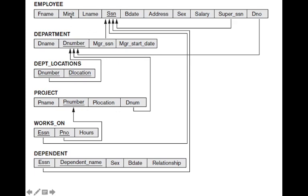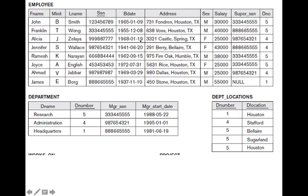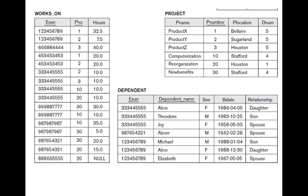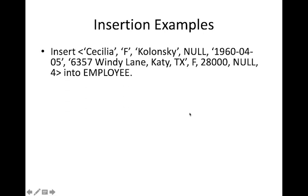The example we will be using is the employee-company database, which we have already seen. These are the different relations in it, and we have already covered foreign keys and referential integrity. We will take this same example and see what types of violations can occur in these tables. We will now see some insertion violation examples. If we take the employee table, we are going to insert values shown in angle brackets, where comma-separated values correspond to each column.